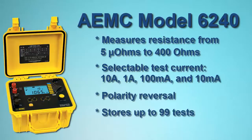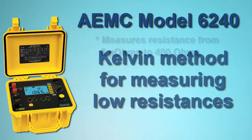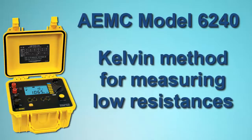Up to 99 measurements can be stored in memory. The Model 6240 employs the Kelvin testing method to measure very low resistances to within a quarter of a percent accuracy.